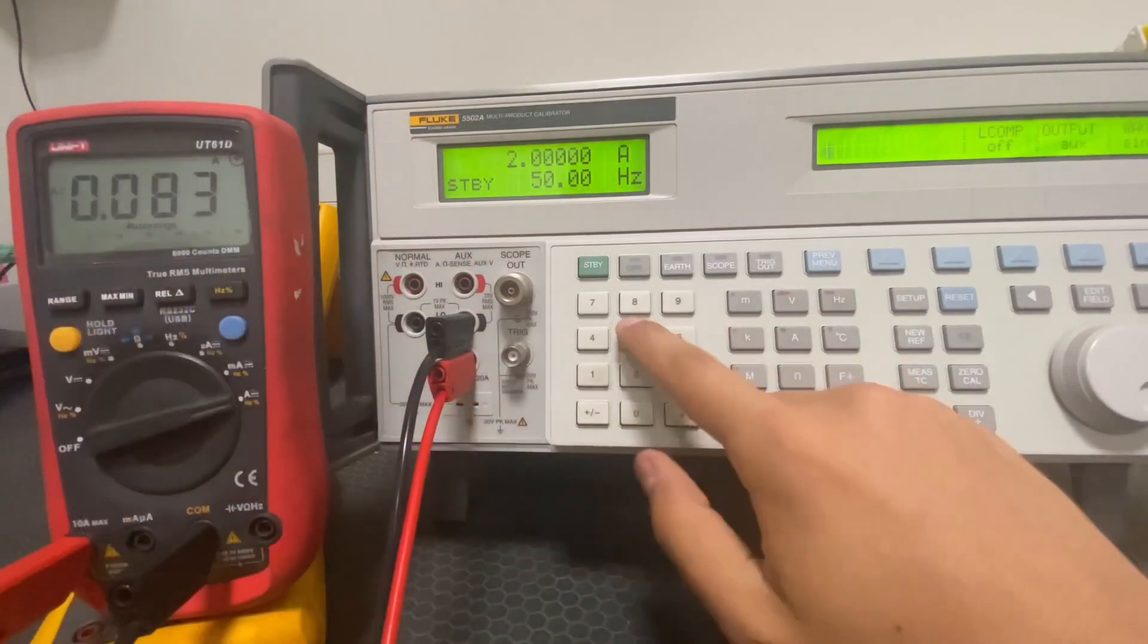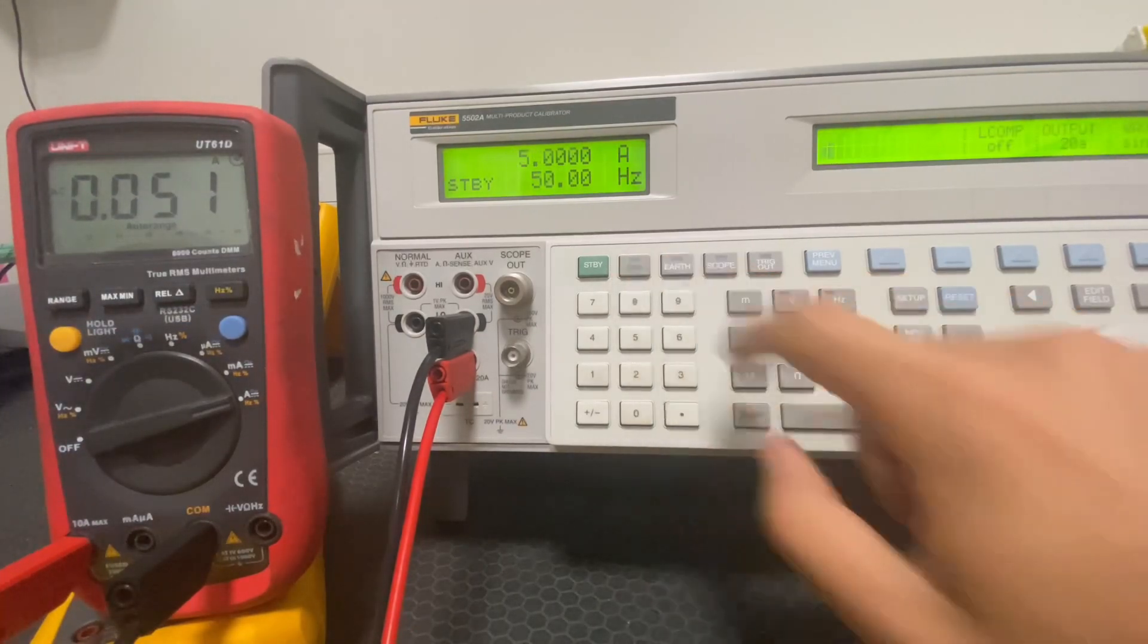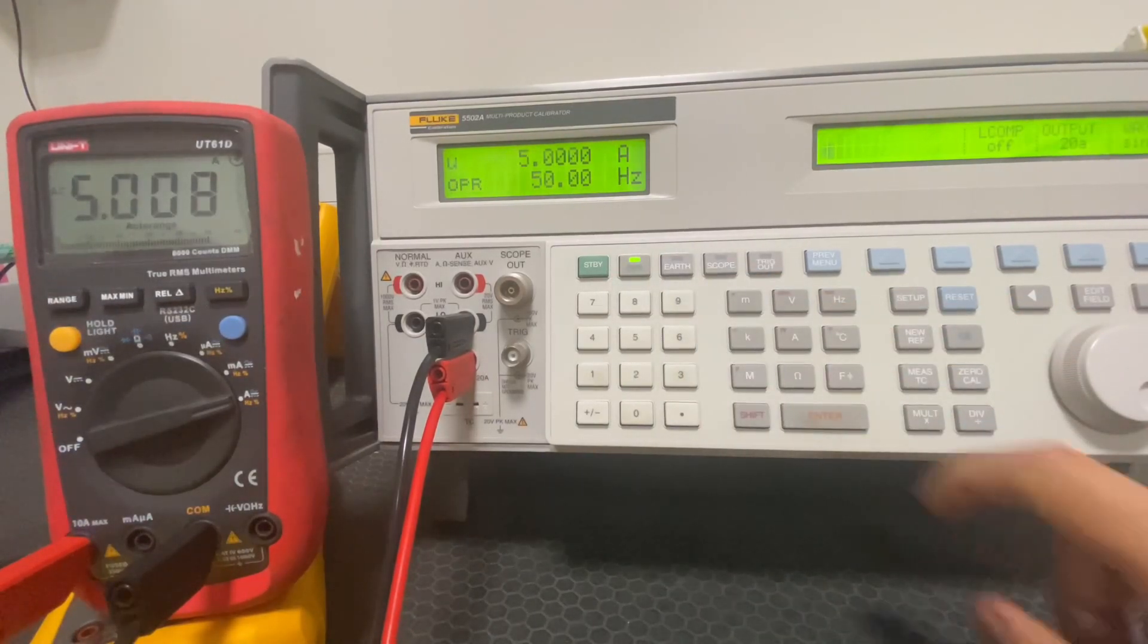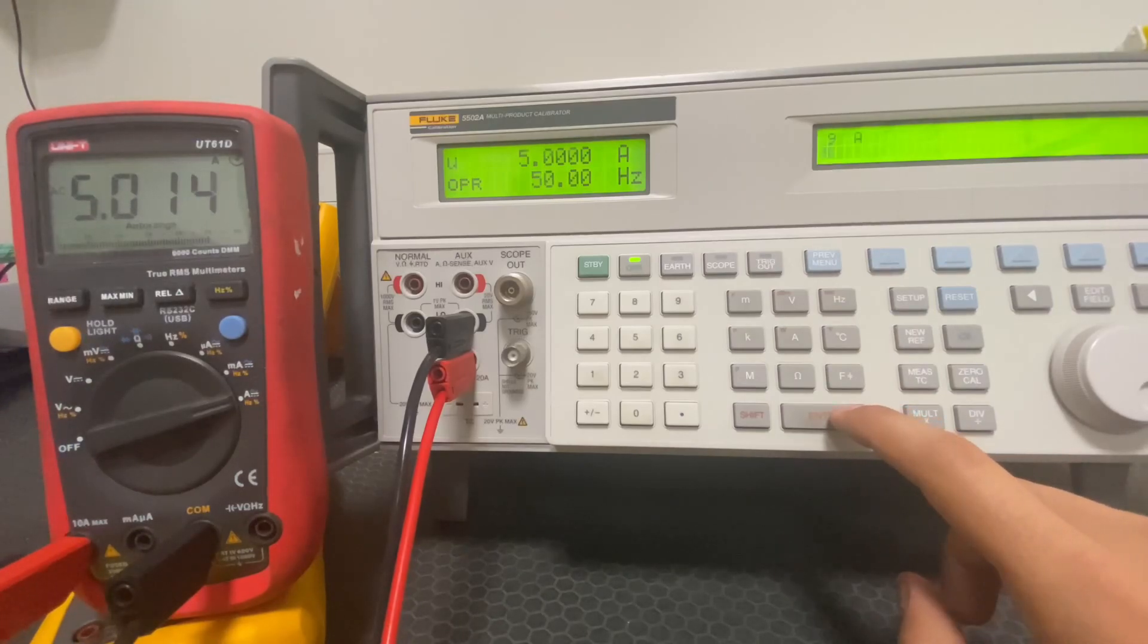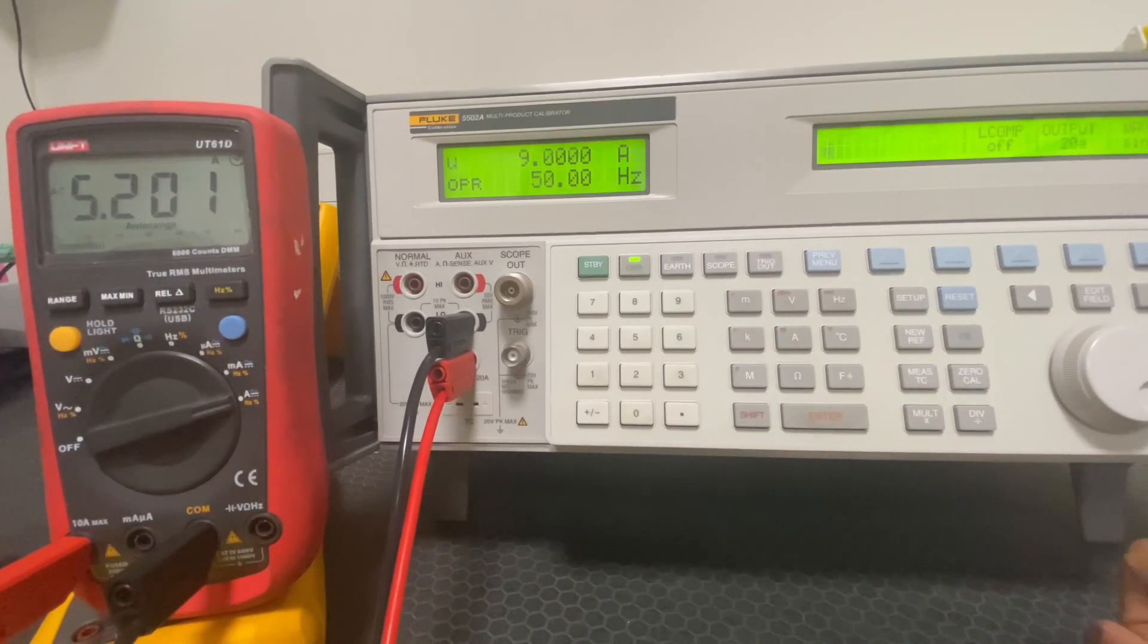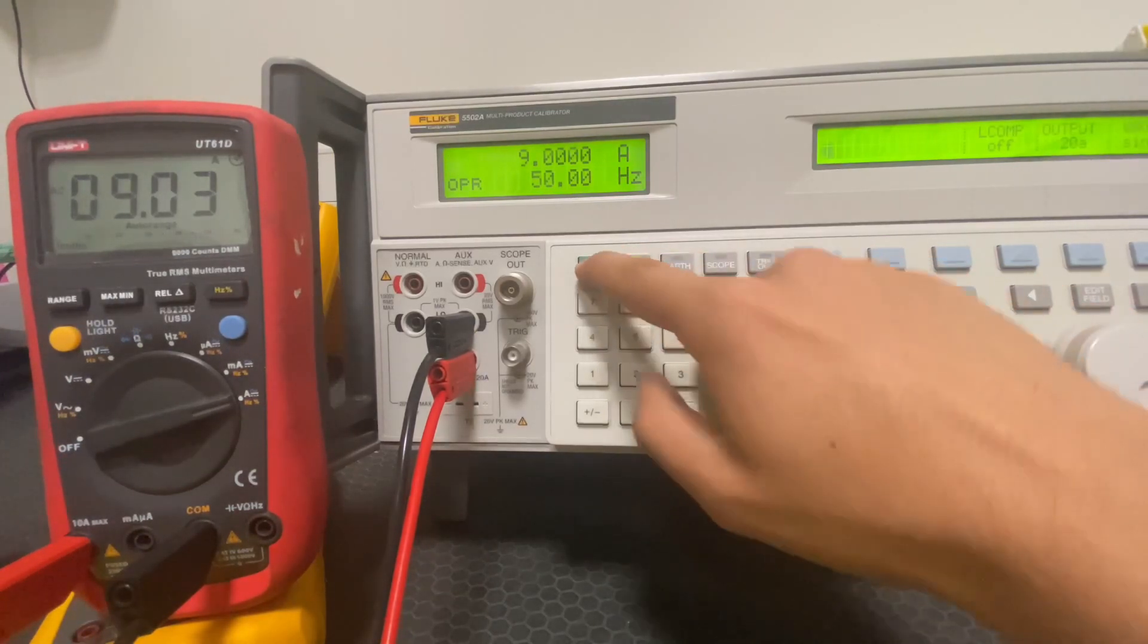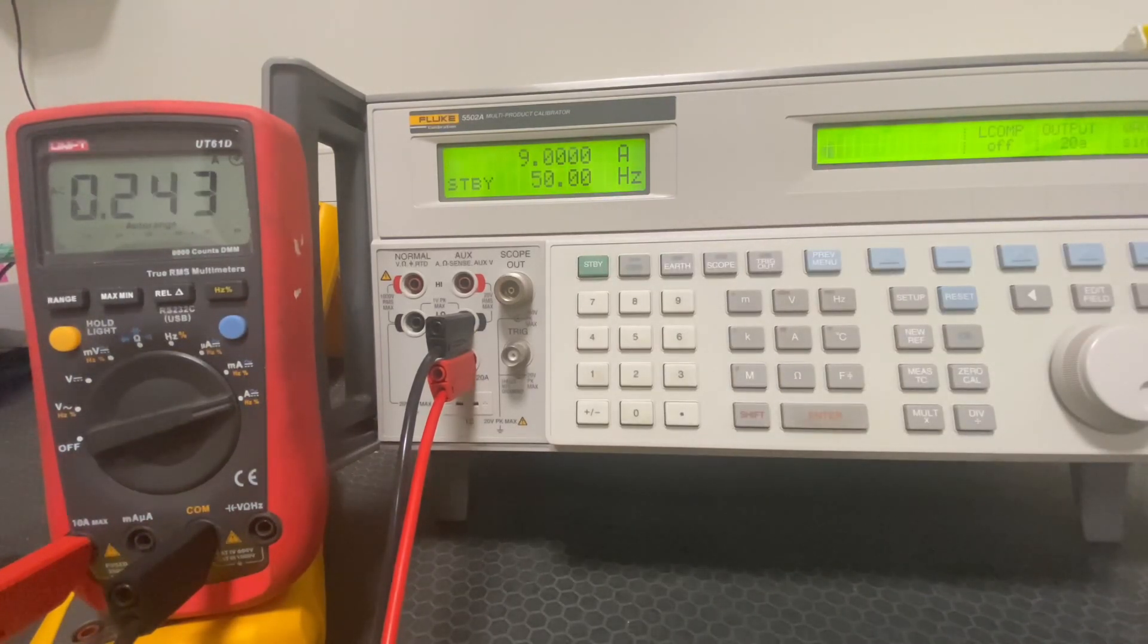In this video, what I can say is this: the Fluke multimeter is of course more stable, but it's 8 times more expensive. For this reason, my preference will be for the Unit's multimeter. Don't forget to like the video and subscribe to my channel. Thanks for watching.